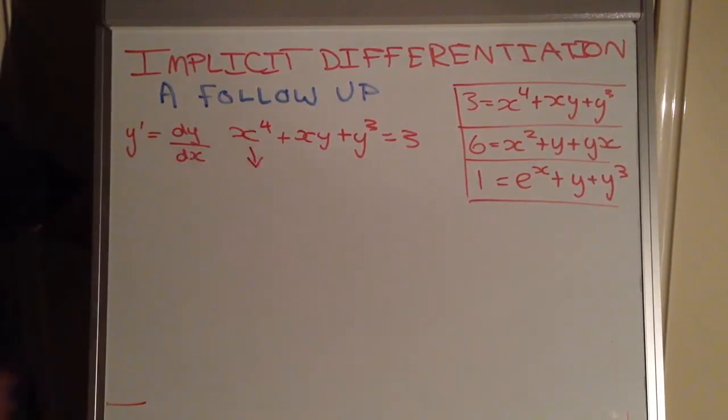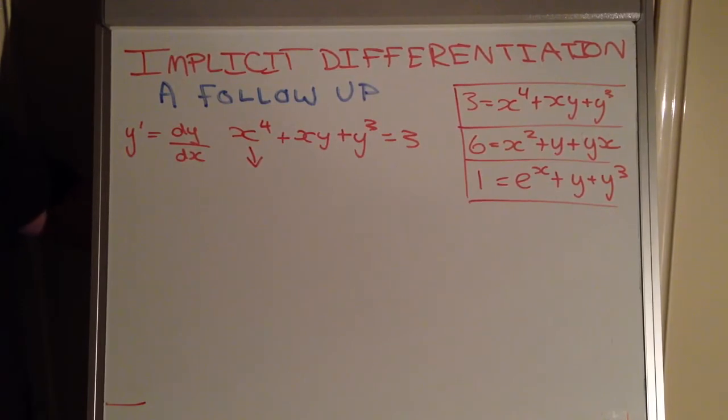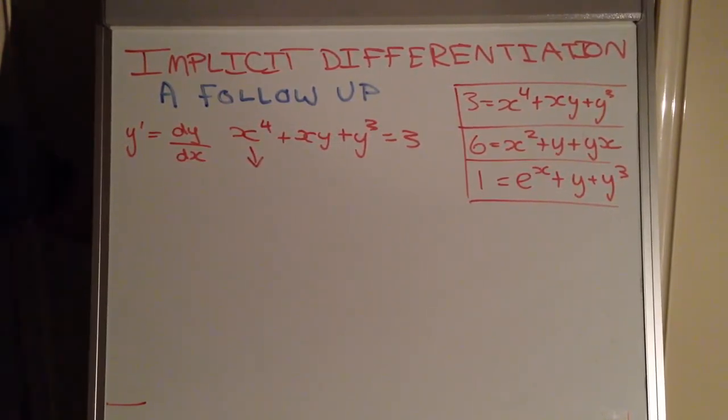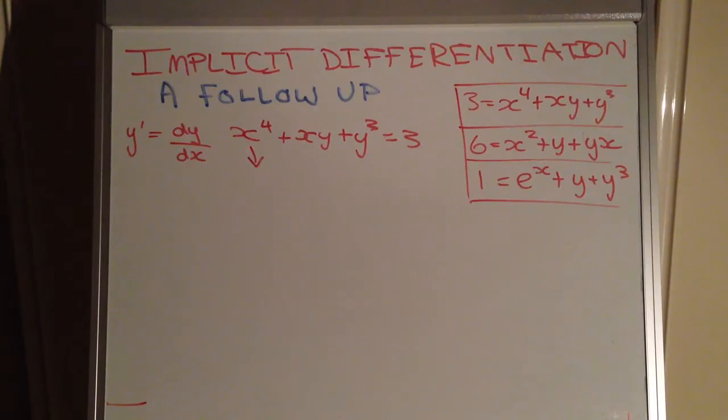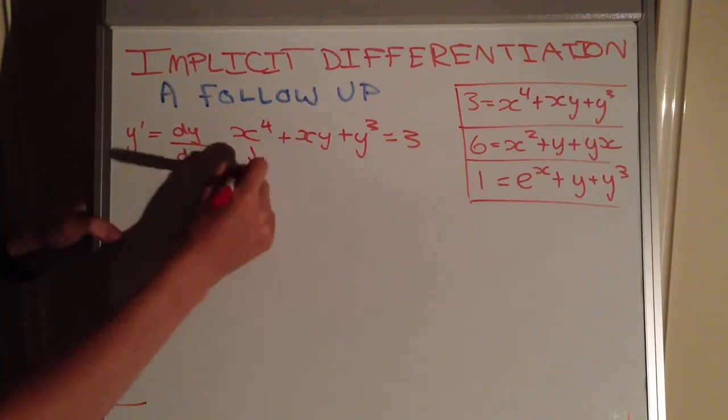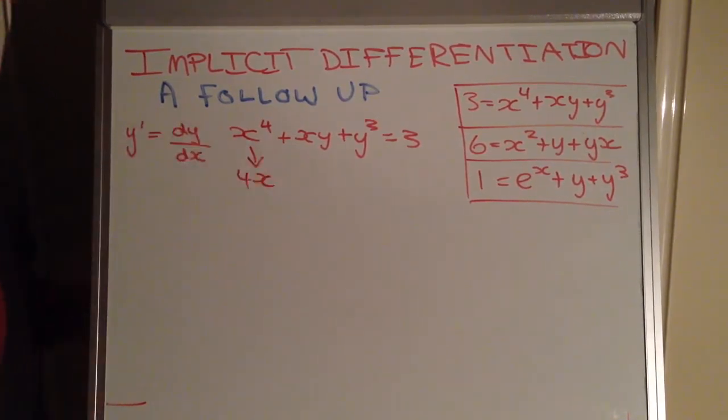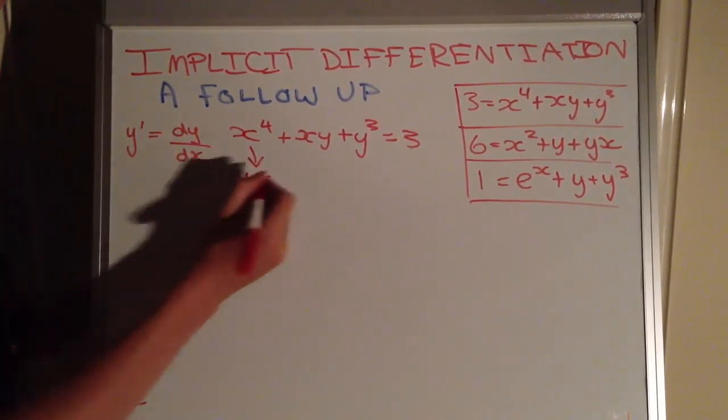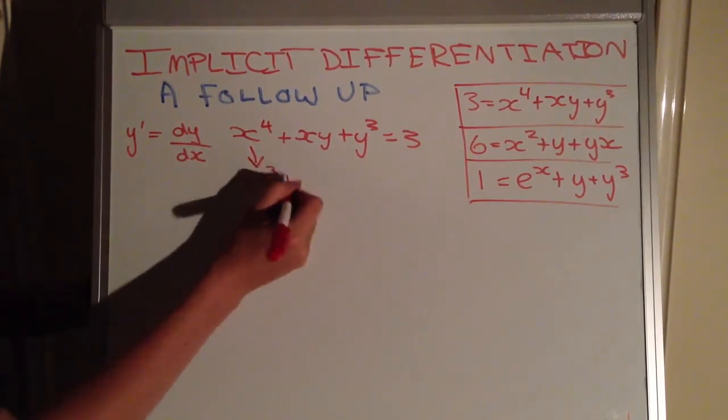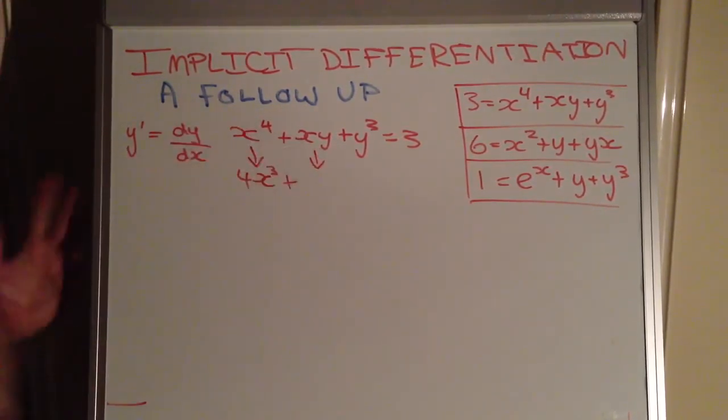Now what we do is we differentiate x to the 4. Very straightforward, we bring that exponent down to coefficient position and we get the product of the coefficient and the exponent, and that's going to be 4, because 4 times 1 is 4. Then we have 4x and we subtract 1 from the exponent, so we have 4x to the 3. Now we treat this next one as a product rule. Why? Well, x and y are multiplied by each other, we have two different terms multiplied, so we need to go through the product rule.